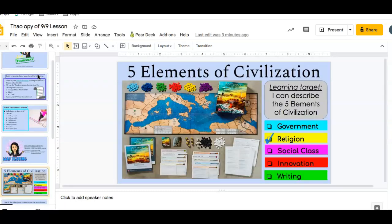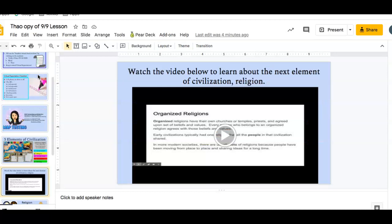Here are the five elements of civilization and we are going to cover religion today. This is the video. Make sure you take the time to watch it. It's very short, but just make sure you jot down some information as to what Miss McGee was telling you in this video.